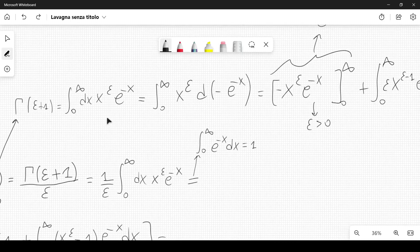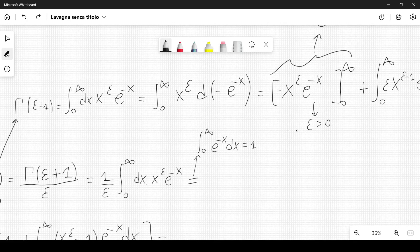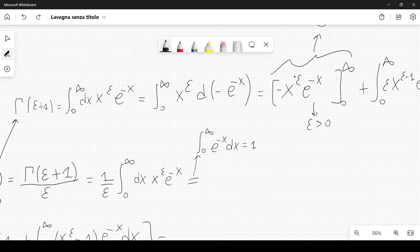In general, epsilon might not be a real number; it could be complex. But we have to make sure the real part of this complex number is greater than 0. Otherwise, we cannot say that this term in the integration by parts would go to 0.